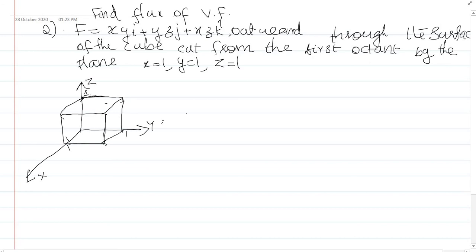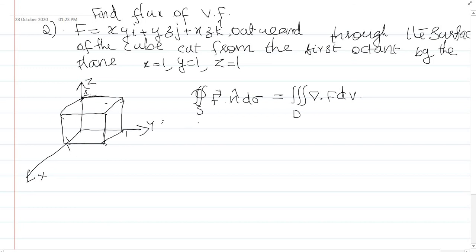To find the outward flux, we use the divergence theorem: the double integral over S of F·n dσ equals the triple integral over D of ∇·F dV. So we need to find ∇·F.